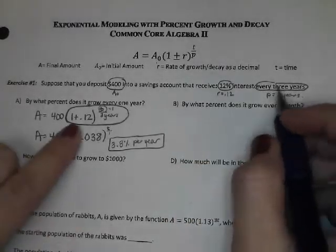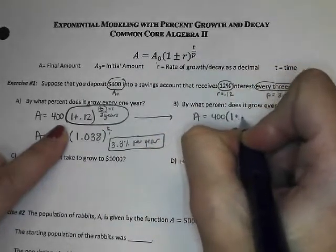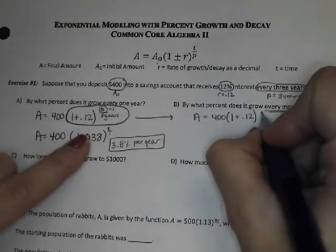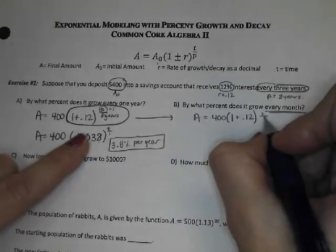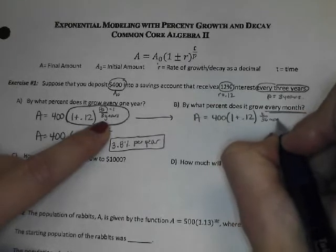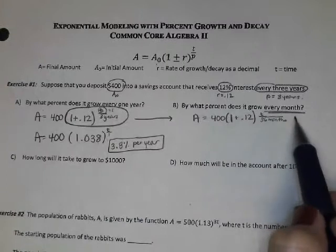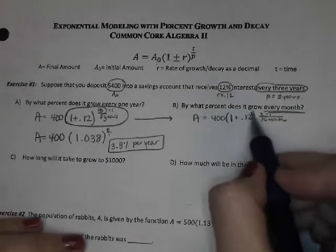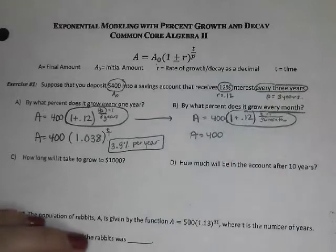By what percent does it grow every month? So let's go with the original again, because that's not a rounded answer. Now this says every month, and so we can't have T up top in one unit and the denominator of three years in another. So I'm going to make the three years, 36 months. Now my T is a month.